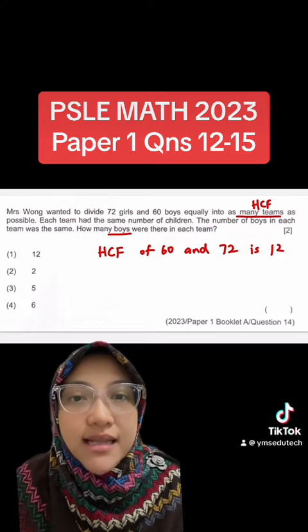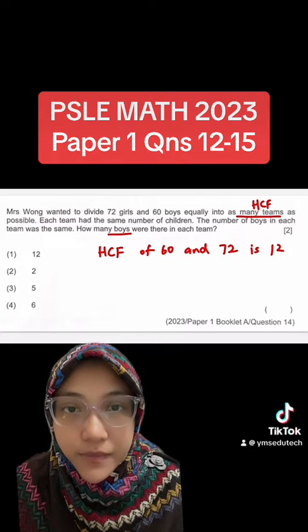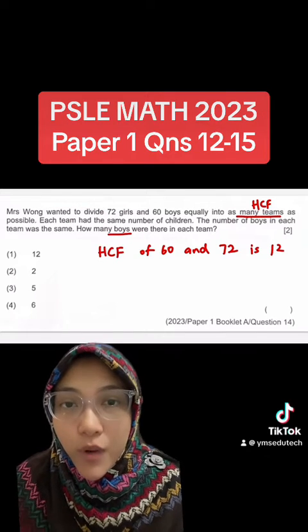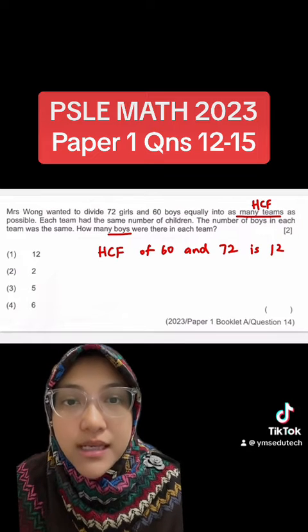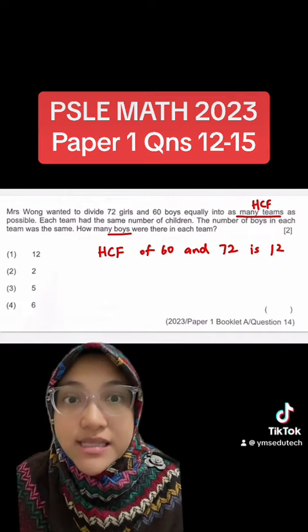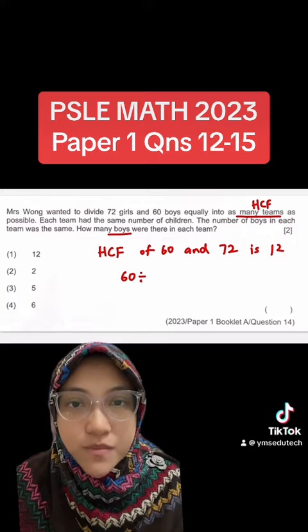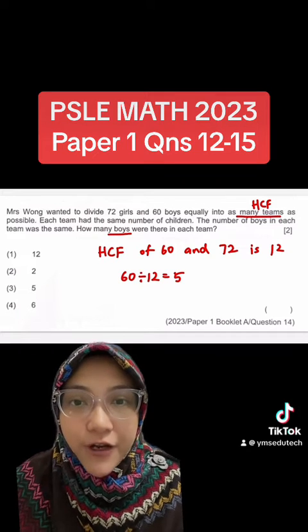This 12 represents the number of teams. To find the number of boys in each team, we take the total number of boys divided by the number of teams. 60 divided by 12 and the answer is 5.